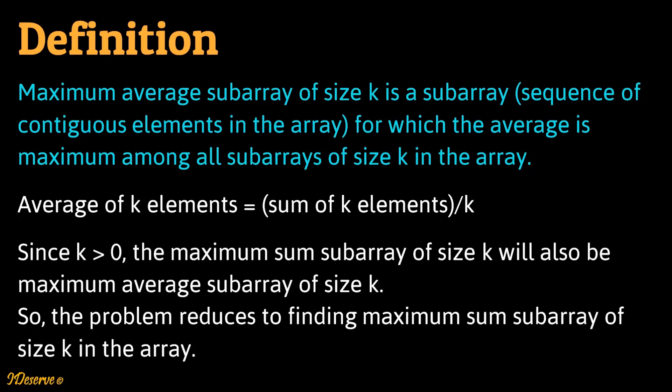So what is maximum average subarray of size k? Maximum average subarray of size k is a subarray — a sequence of contiguous elements in the array — for which the average is maximum among all subarrays of size k in the array.